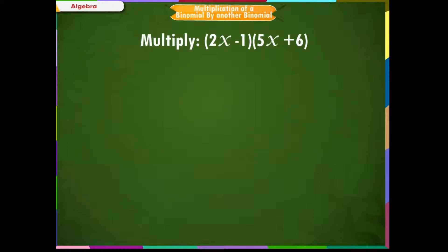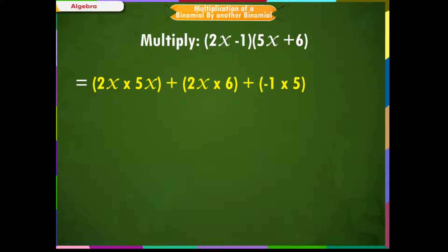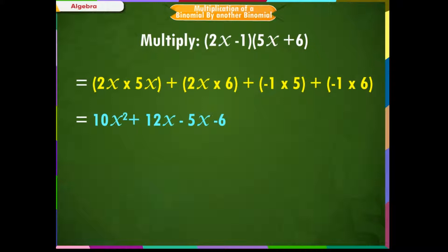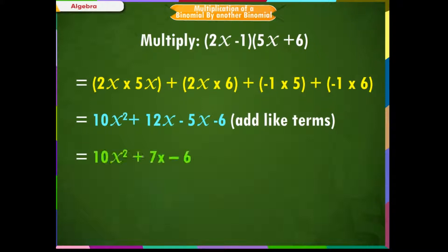Example 1. Multiply 2x minus 1 with 5x plus 6. Solution: 2x into 5x, plus 2x into 6, plus minus 1 into 5x, plus minus 1 into 6, is equal to 10x squared plus 12x minus 5x minus 6. Adding like terms, this equals 10x squared plus 7x minus 6.